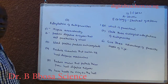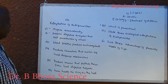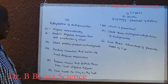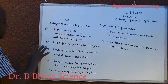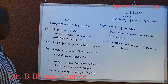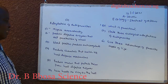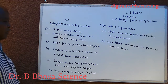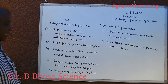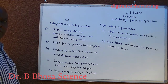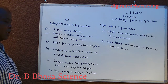Adaptations of endoparasites: One, they respire anaerobically. Two, they produce digestive enzymes that aid penetration of a host. Three, blood feeders produce anticoagulants. Four, they produce chemicals that switch off host defense mechanisms. Five, they produce mucus that protects them from host digestive enzymes. Six, they have hooks or suckers to cling on to the host.